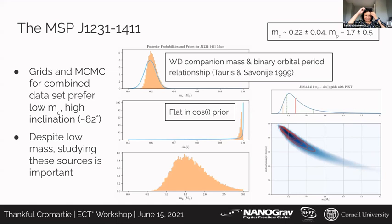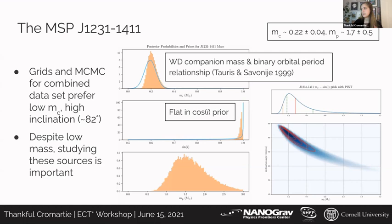These are very preliminary results, so please take them with a large grain of salt. We do see that J1231-1411 is at a high inclination angle of about 82 degrees, and it is not a notably massive millisecond pulsar. Our constraint on the mass is not great — 1.7 ± 0.5 solar masses — which is just meant to suggest what we're seeing, not finalized results by any means.